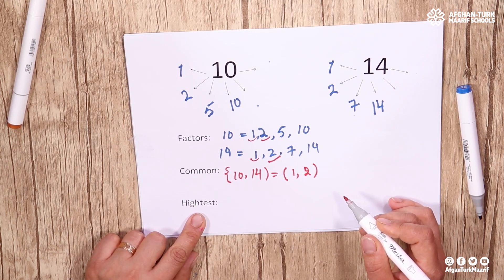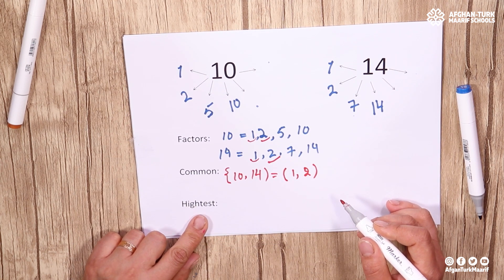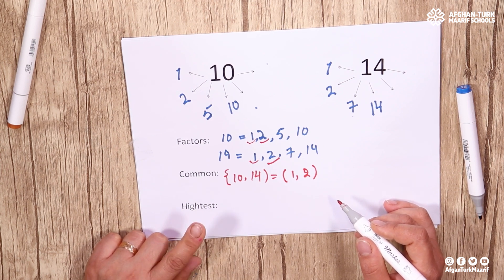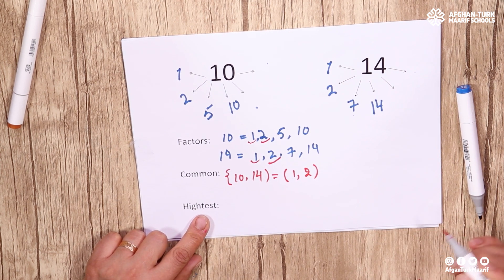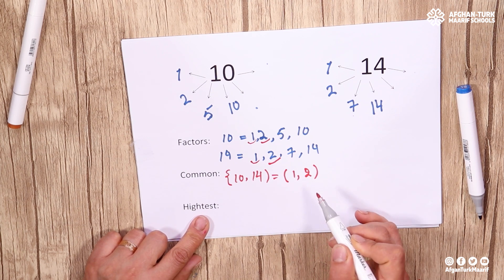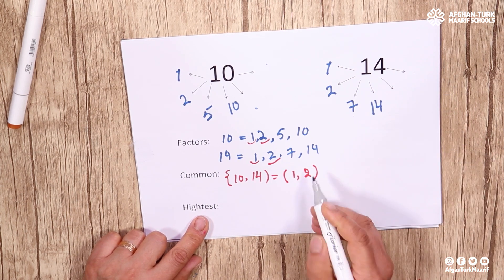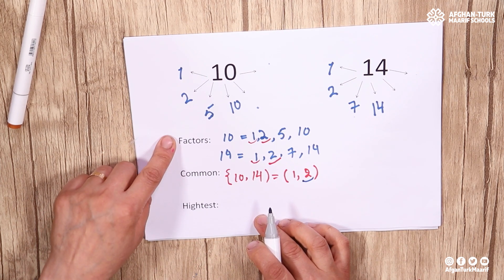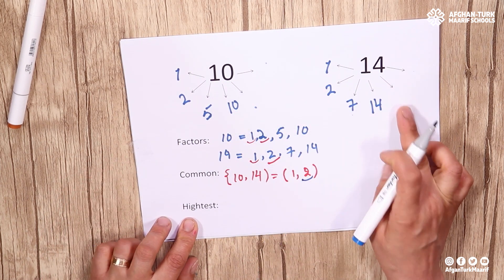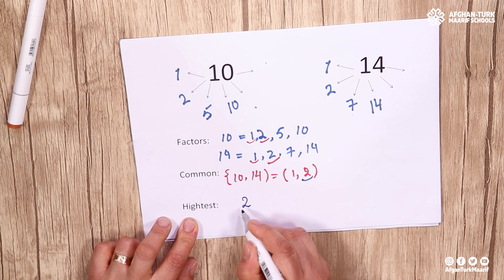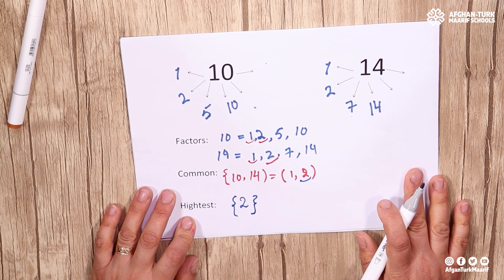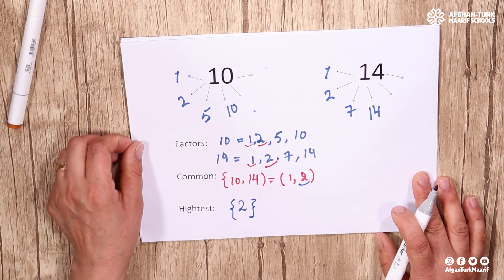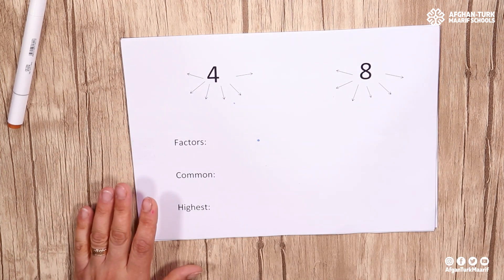Now it's time for the last word: highest. As we said, highest means the biggest, the greatest one. Between the common factors 1 and 2, the greatest number is 2. So the highest common factor between 10 and 14 is 2. We can easily find it once we know the factors. Let's go to another example for more practice.